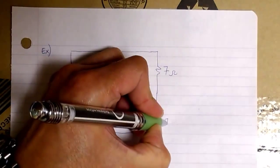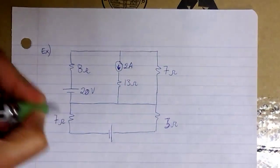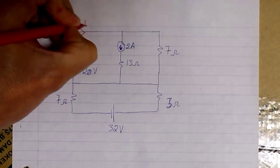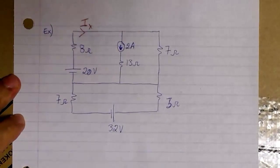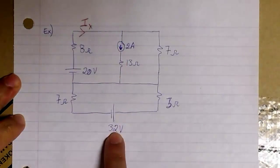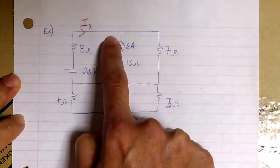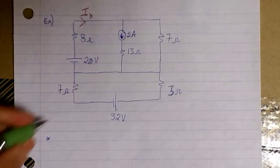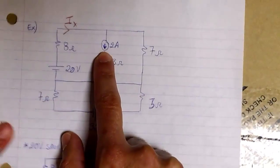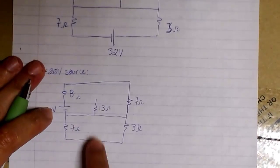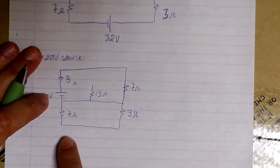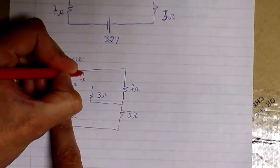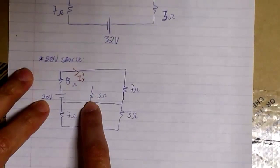In this second example we have three sources: two voltage sources and one current source — 32 volts, 20 volts, and 2 amps. We want to find Ix, the current flowing through the 8 ohm resistor. We are going to apply superposition to find Ix. We start with the 20 volt source, replacing the current source with an open circuit and the other voltage source with a short circuit. Ix prime is the contribution of the 20 volt source to the current flowing through the 8 ohm resistor.